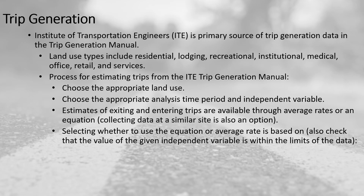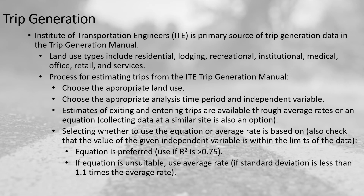Selecting whether to use the equation or the average rate is based on the equation's R-squared value. R-squared describes how well the equation fit the data. If the R-squared is greater than 0.75, you should use the equation — that's the preferred method. But if the R-squared isn't provided or is less than 0.75, you should use the average rate if the standard deviation is less than 1.1 times the average rate. Otherwise, you do need to collect local data.